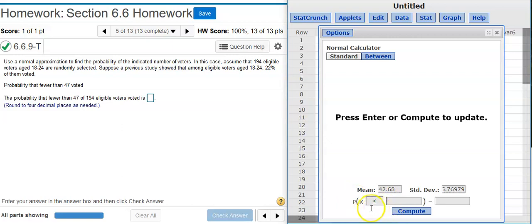We want less than or equal to because that's fewer. But fewer than 47 does not include 47. So I have to go down a notch, say 46.5. This is my continuity correction. Now I hit compute.